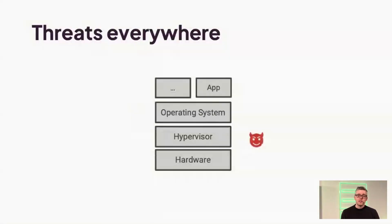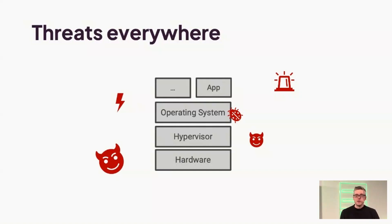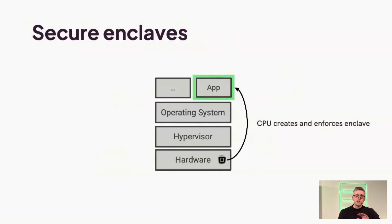Let's talk about how this works. Consider a typical software-hardware stack in the cloud: on top we have our app, running on an operating system, which runs on a hypervisor, which runs on some hardware. In all layers of the stack, threats may hide or exist. The core idea of confidential computing is to have the CPU create what is called a secure enclave around your app, shielding it from the rest of the stack and from threats that may come from the infrastructure.